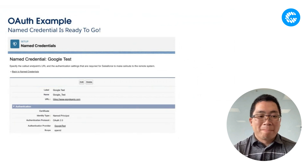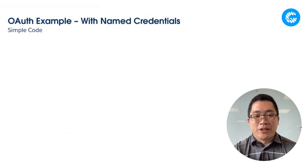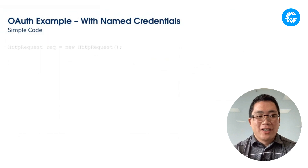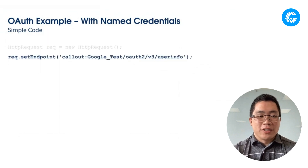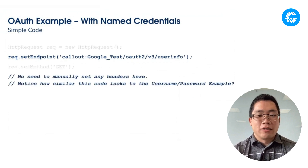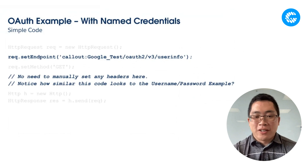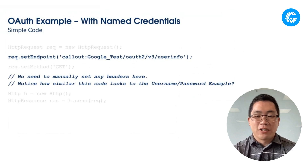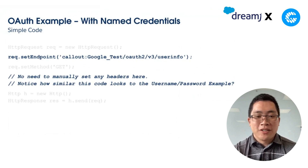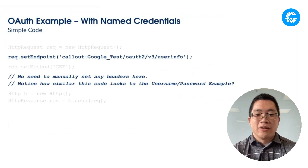One thing you'll notice is a checkbox at the bottom: 'Start authentication flow on save.' If I tick that and hit save, setup will redirect me to actually authenticate with this API through OAuth 2.0 and store all the necessary tokens so that the named credential is ready to use — in this case, logging in with my Google account. In the code, we once again construct the HTTP request, set the endpoint referencing the named credential, set the method, and send the request. No headers to set, no tokens to get or refresh — that's all handled behind the scenes by Salesforce.